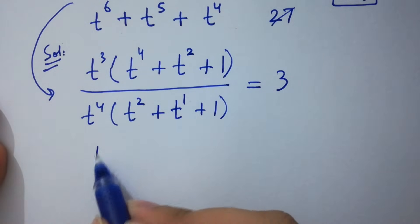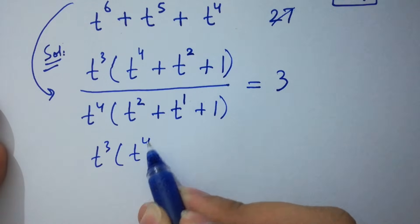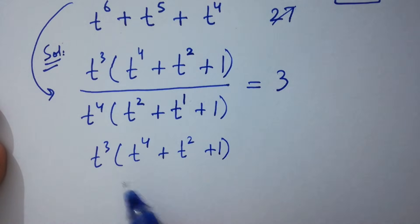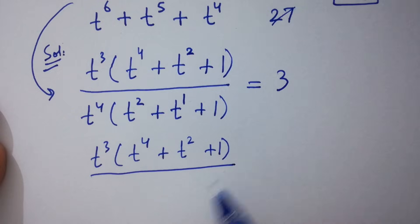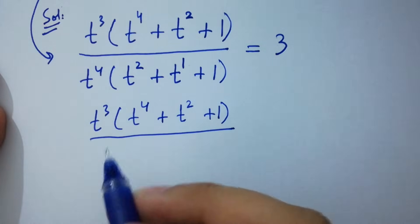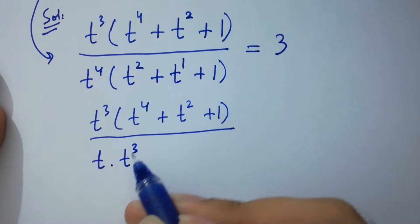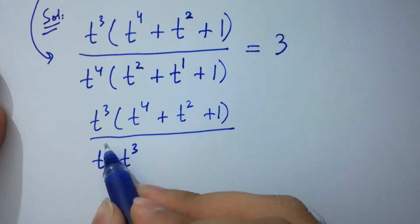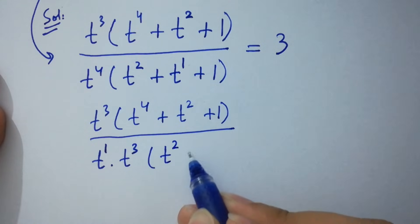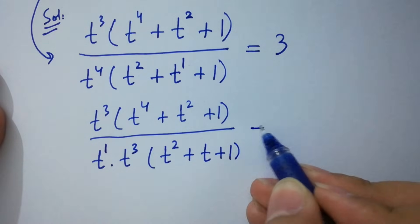Simplifying this: t cubed times bracket t to the power 4 plus t squared plus 1, over t to the power 4. Now t to the power 4 can be written as t times t cubed, because 3 plus 1 is 4, times bracket t squared plus t plus 1, as it is, equals 3.